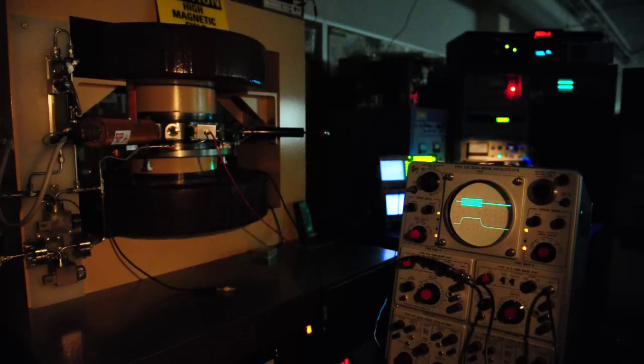The bottom trace is displaying the beam current as it's being collected at the Faraday cup at the end of the radial positioner.